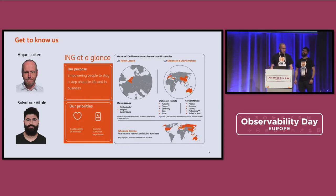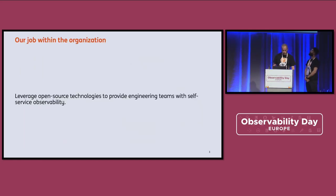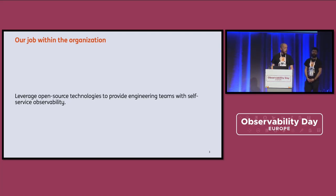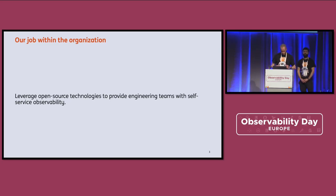We are here on behalf of ING. ING is a bank with a global presence, but by far the biggest presence is in Europe. Our job within the organization is quite interesting because only two years ago we were still using monitoring systems like Tivoli and HP OpenView. We identified that open source was the way forward, and what we want to provide is a self-service platform for our engineers so they can simply spin up the observability that they need.